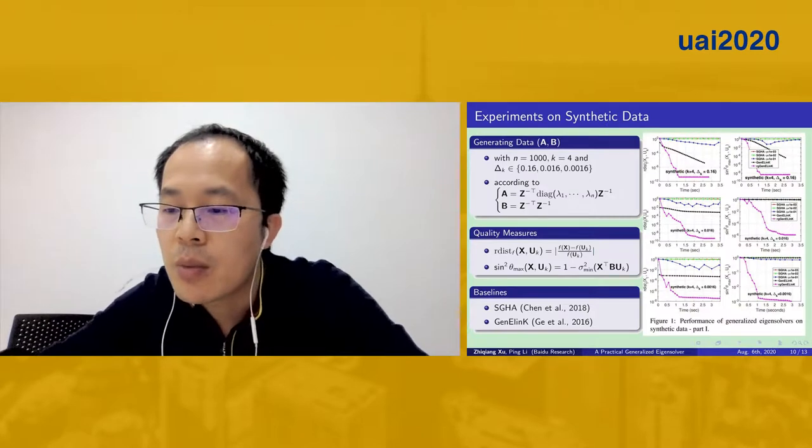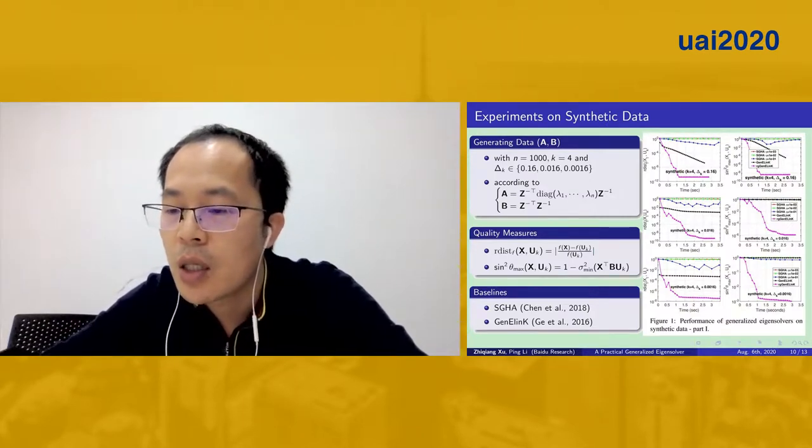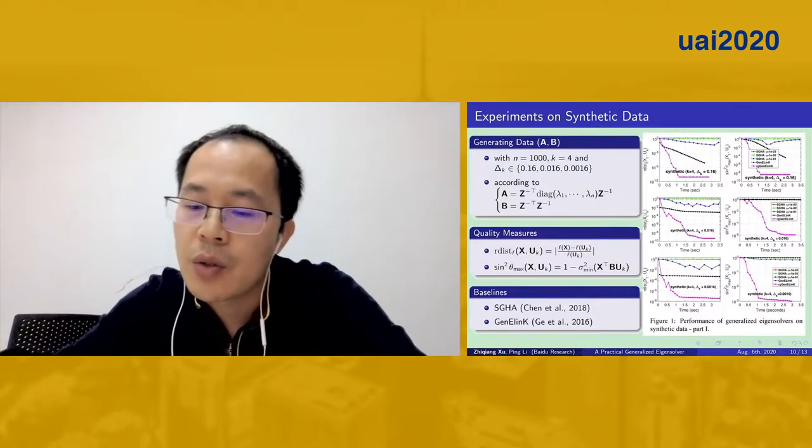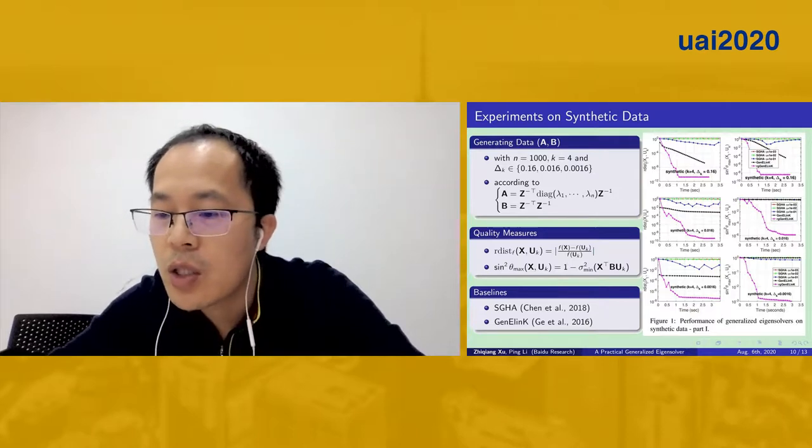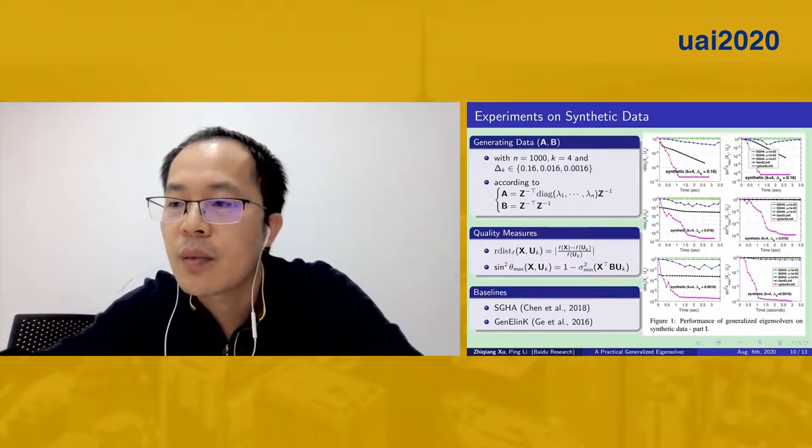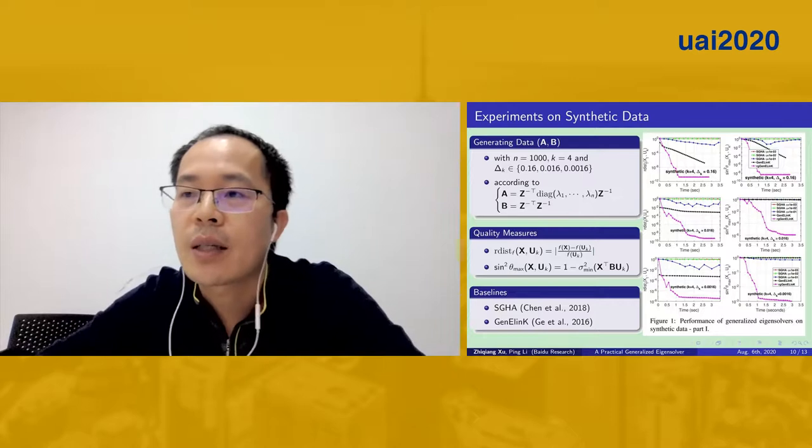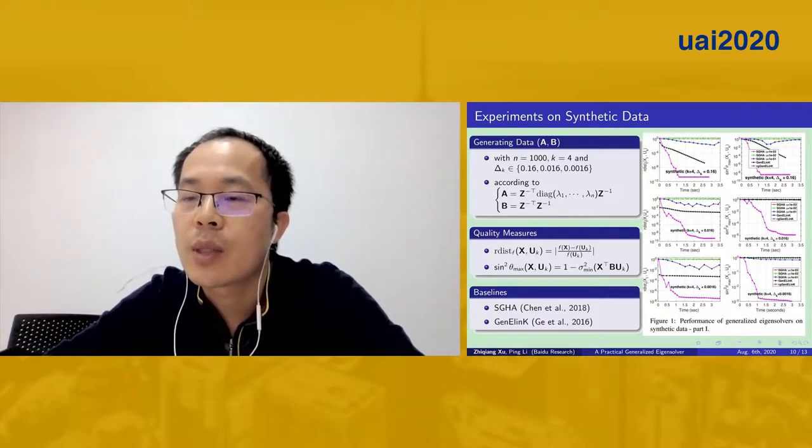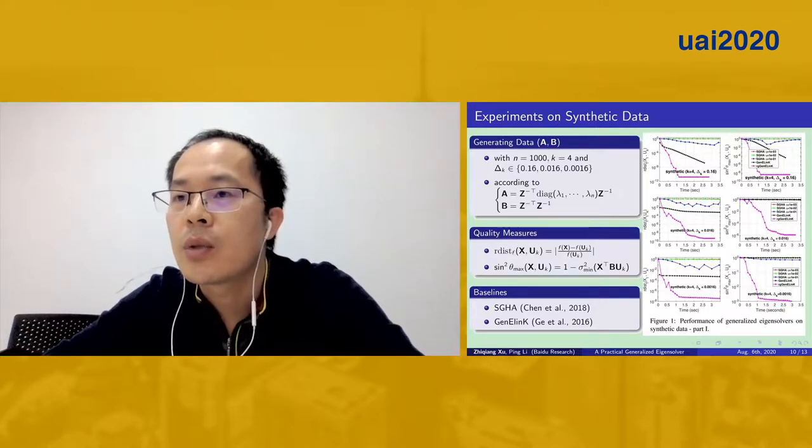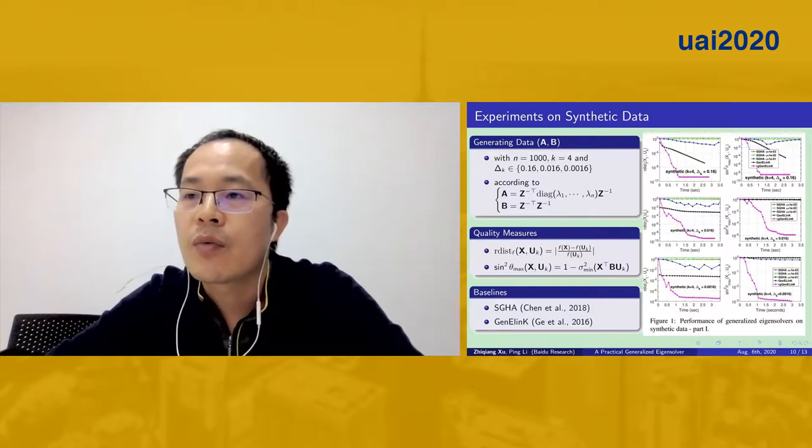We now show some experiments on the proposed algorithm denoted as RGD-Link compared to the GD-Link and the stochastic generalized Hebbian algorithm with different step sizes. We use the preconditioned CG as the least-squared solver. The first test on synthetic data with specified eigenvalue gaps uses relative objective error and the squared sine value of the principal angle between iterate and ground truth as the quality measure.